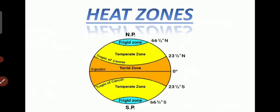Next is the temperate zone — it can be the north temperate zone or the south temperate zone. The north temperate zone lies between the Tropic of Cancer and the Arctic Circle, and the south temperate zone lies between the Tropic of Capricorn and the Antarctic Circle — approximately 23.5° to 66.5° north, and 23.5° to 66.5° south. Here the sun's rays are slanting, so the temperature is moderate.